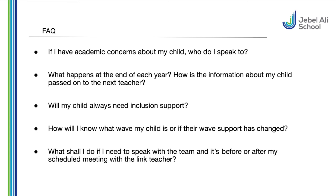What happens at the end of each year and how is information about my child passed on to the next teacher? Every year the inclusion team or pastoral team will meet with the next class teachers and go through the needs of every single child in that class. They will go through pupil profiles and look at the provision map so that the next class teacher is well informed about the needs moving up to their class. We do this at the end of the year so that everybody is on the same page and the support can happen as soon as they start in September.